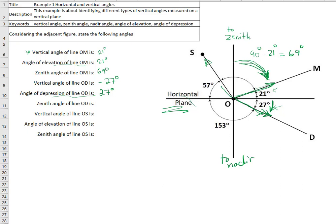The zenith angle of line OD is always measured from the zenith direction all the way to the line. We have 90 degrees plus this angle, which is 27 degrees below the horizon. So the zenith angle of line OD equals 90 plus 27, which is 117 degrees.